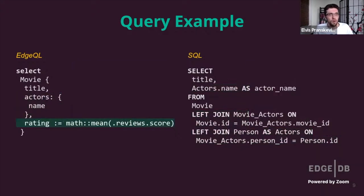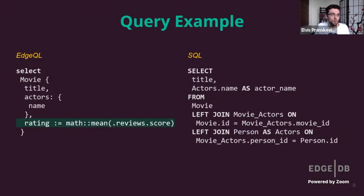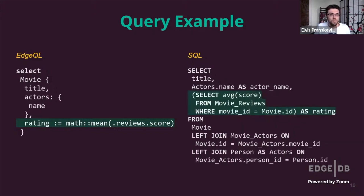Simply selecting existing data is boring, so let's compute something — in this case, an average review score for every movie we selected. In EdgeQL, we simply call the mean function on the set of all associated review scores. SQL doesn't do too bad either — it's more verbose and needs an explicit subquery for aggregation, but it's okay.